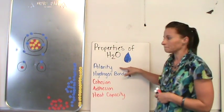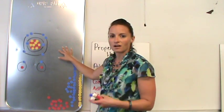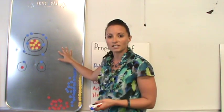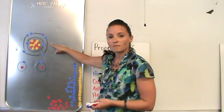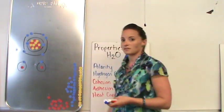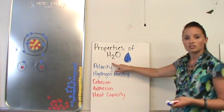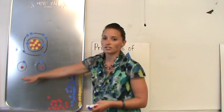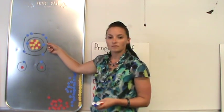The first one is its polarity. So let's go over here and talk about the components of water. Water is made up of an oxygen molecule and two hydrogen molecules. That's why it's H2O. We have the two hydrogen and one oxygen molecule.